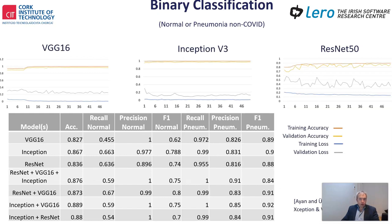To empirically validate the approach and provide a baseline for binary classification, a similar approach to that of Narin and colleagues was performed. The binary classification had seven different configurations, three of which are based on individual transfer learning models, and four of which are different combinations using ensemble-based learning. Inception had the highest accuracy at just over 87% for the single model.